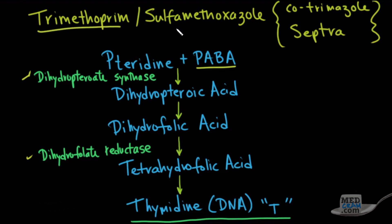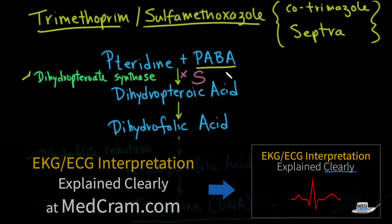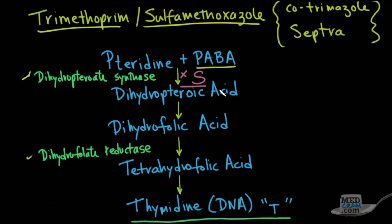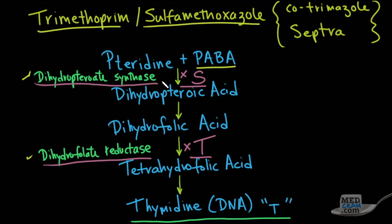There's trimethoprim, which is the first component, and then sulfamethoxazole. Sulfamethoxazole works at the first enzyme — dihydropteroate synthase — and blocks it. The reason it blocks it is that sulfamethoxazole is a similar molecule to PABA, so the enzyme mistakes sulfamethoxazole for PABA and therefore shuts down. Sometimes some substrate gets through, or there may be a mutation, and that's when trimethoprim comes in, working at the dihydrofolate reductase step to also block it. So if the bacteria is susceptible at both areas, you're going to get a synergistic effect from this antibiotic.